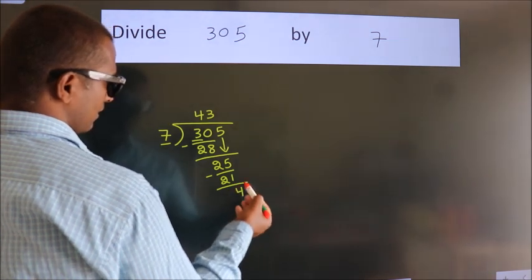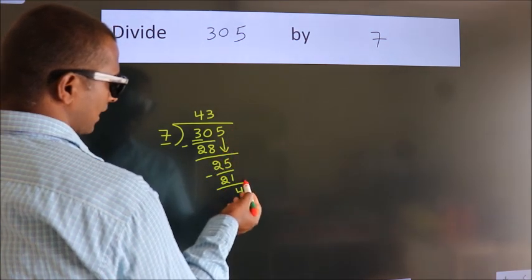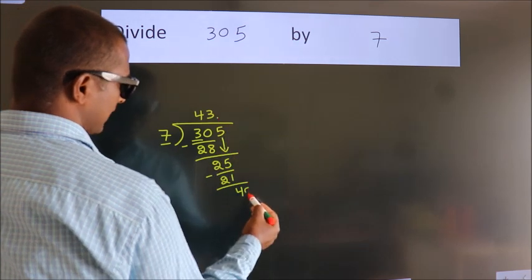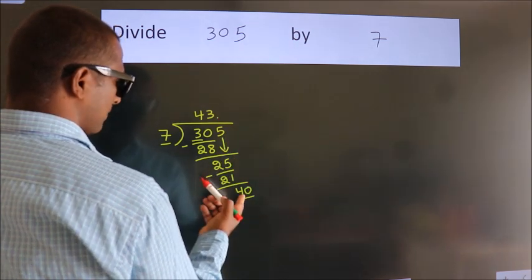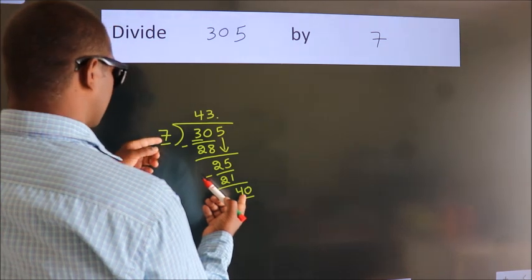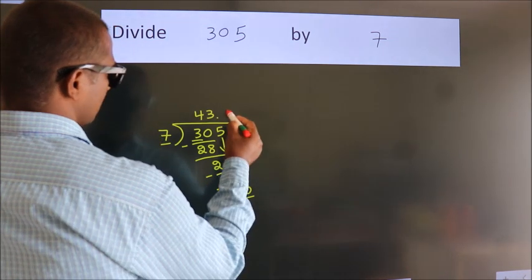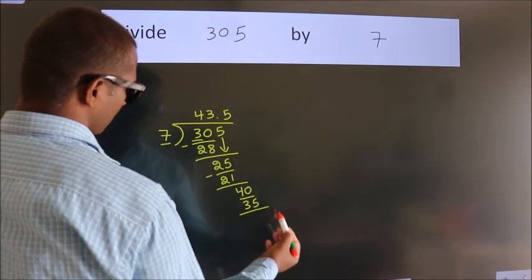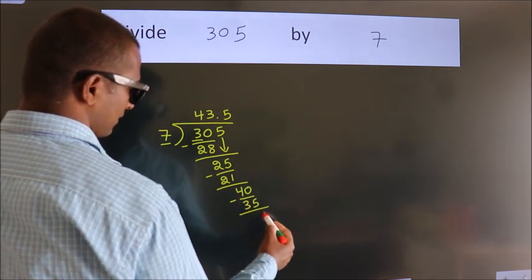After this, there are no more numbers to bring down. So what we do is put a dot and take 0, giving us 40. A number close to 40 in the 7 table is 7 fives, 35. Now we subtract and get 5.